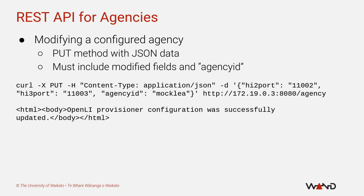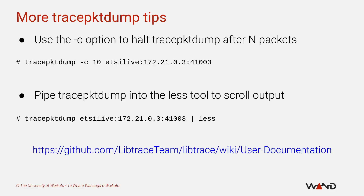Finally, you can use the PUT method to modify the properties of an existing agency. A PUT request looks very similar to the POST request used to add a new agency, except the JSON object only needs to contain the properties being modified as well as the agencyId property — any unchanged properties can be left out and they will remain unchanged. In this example I'm using the PUT method to change my HI2 and HI3 ports to different values. Of course, if I do this then I would need to restart my trace_packet_dump instances to listen on the new port numbers, otherwise the mediator would not be able to establish its handover sessions with my mock agency.